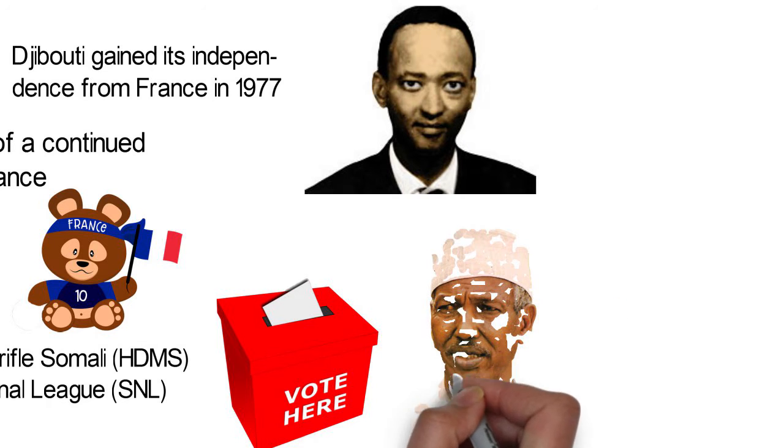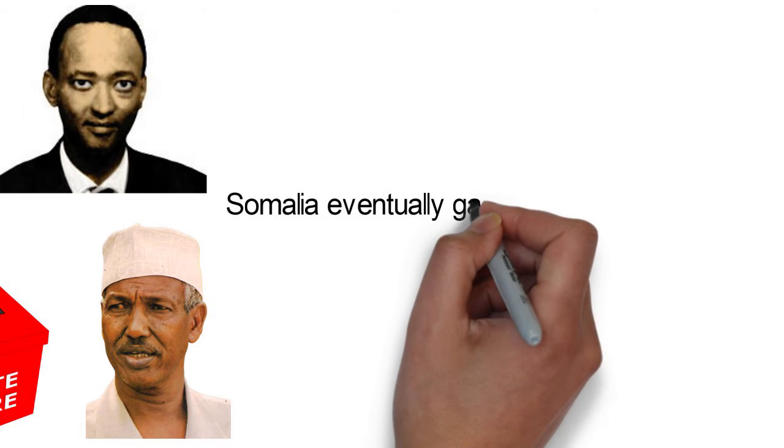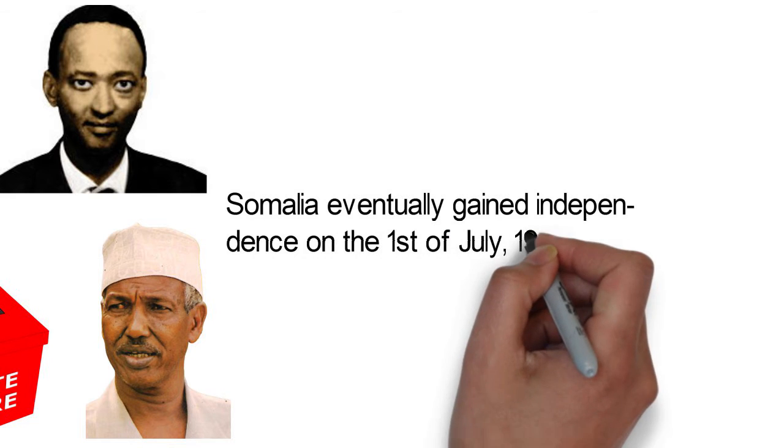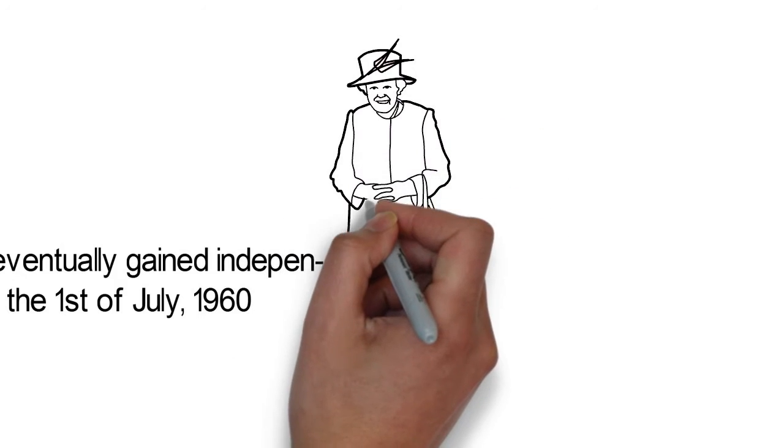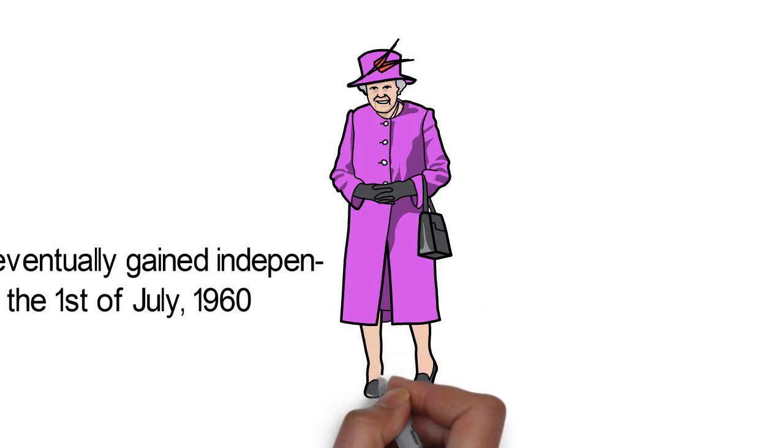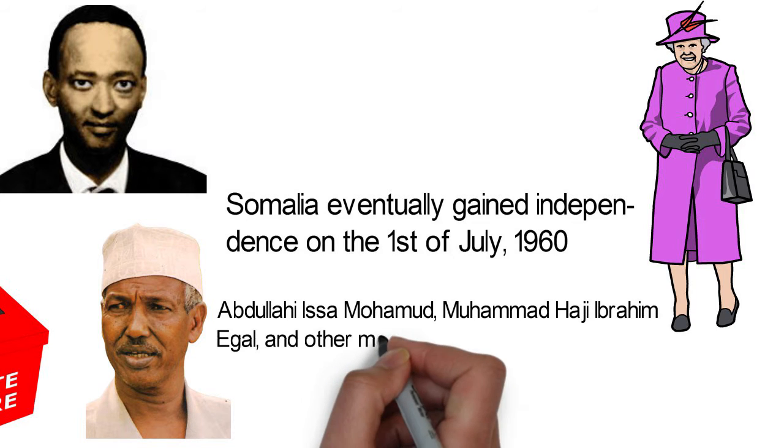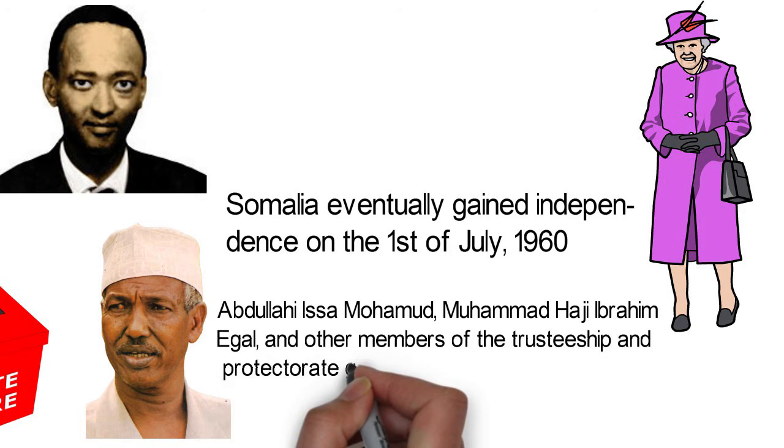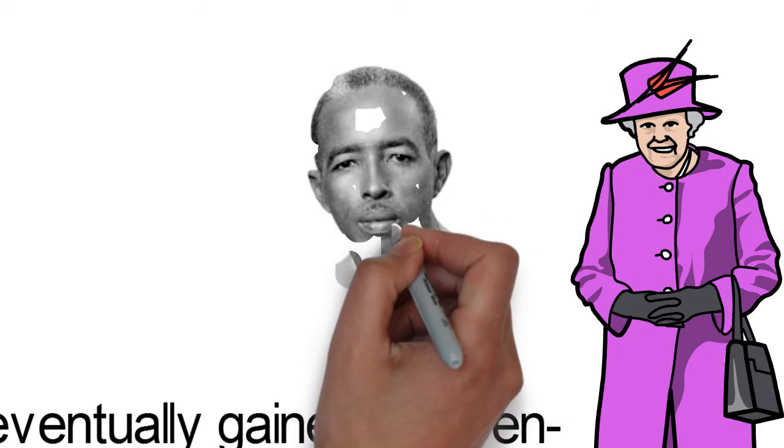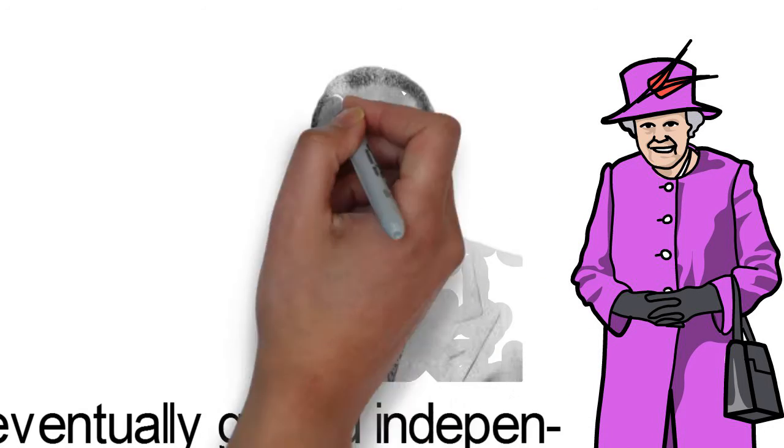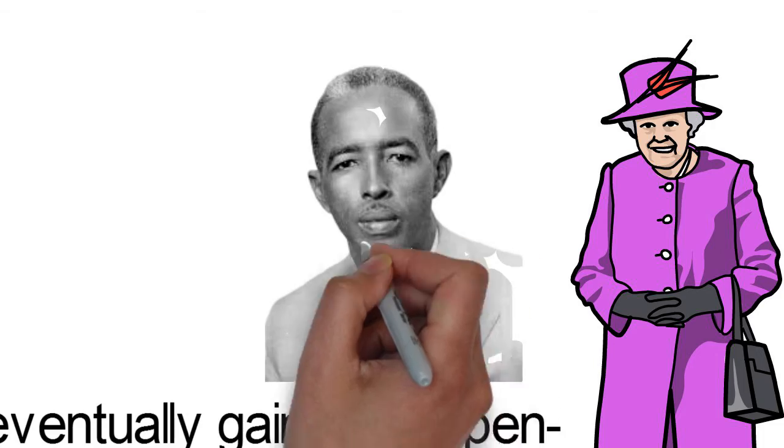After much struggle, Somalia eventually gained independence on the 1st of July 1960. It was on the same day that two territories united to form the Somali Republic, but operated within the boundaries of Italy and Britain. Abdullahi Isa Muhammad, Muhammad Haji Ibrahim Egal, and other members of the trusteeship and protectorate governments formed a government, alongside the Speaker of the Somali Union Act, Haji Bashir Ismail Yusuf, who emerged as President of the Somali National Assembly, and Aden Abdullah Osman Dar, President of Somali Republic.